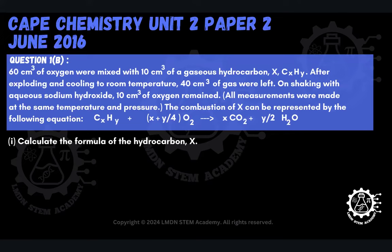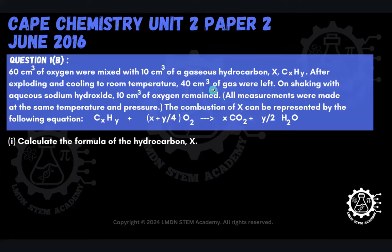We will be doing question 1b which reads as follows: 60 cm³ of oxygen were mixed with 10 cm³ of a gaseous hydrocarbon X. We can denote that gaseous hydrocarbon X as CₓHᵧ, where X and Y are the unknown number of atoms present of each element. After exploding and cooling to room temperature, 40 cm³ of gas were left. On shaking with aqueous sodium hydroxide, 10 cm³ of oxygen remained.